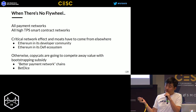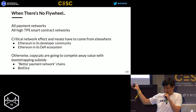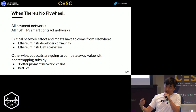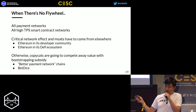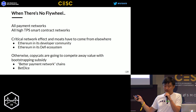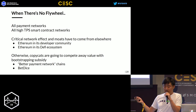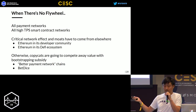For example, Ethereum and its developer community is itself a network effect and a moat for other high-TPS smart contract platforms — but that's not in its token price or flywheel feedback loop. Ethereum's DeFi ecosystem is similar: the more DeFi projects you have, the more you attract more DeFi projects. So if you don't have a flywheel, make sure you have moats or network effects somewhere else. Otherwise copycats will compete away value through bootstrap subsidies — and that's why so many Bitcoin payment forks have died.